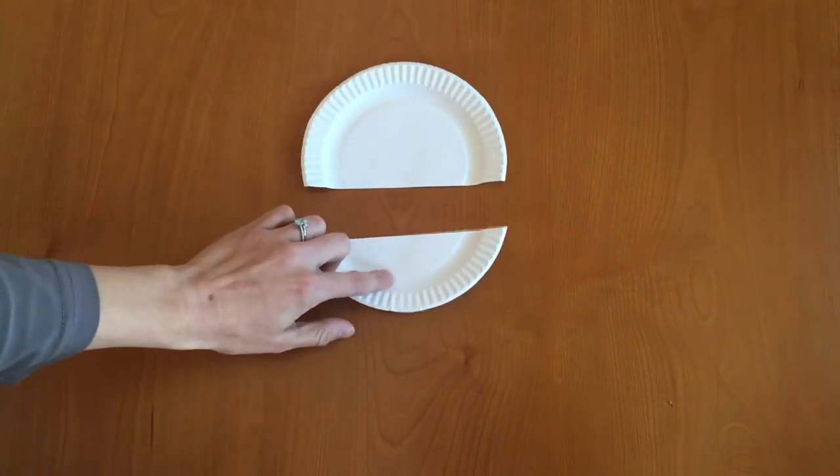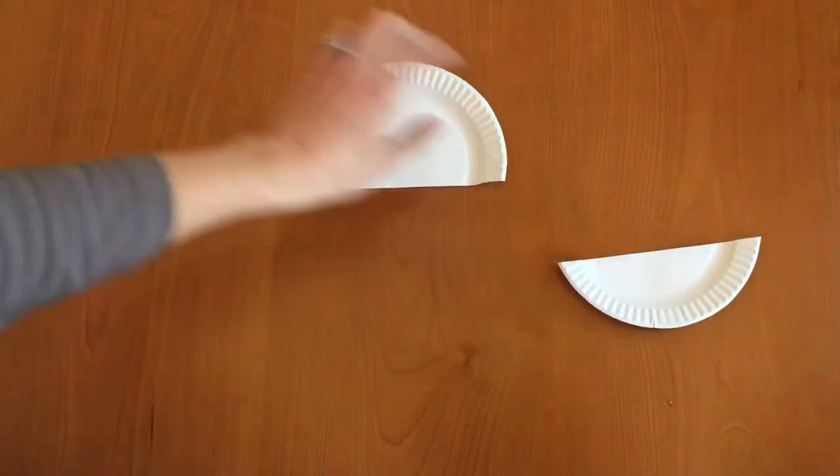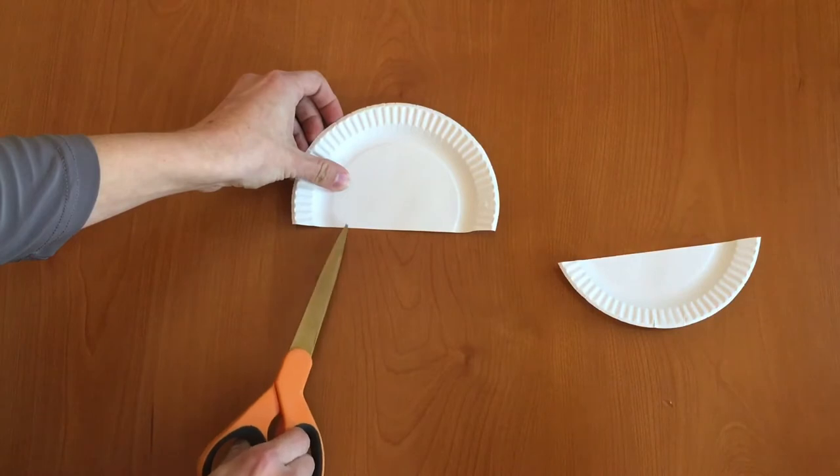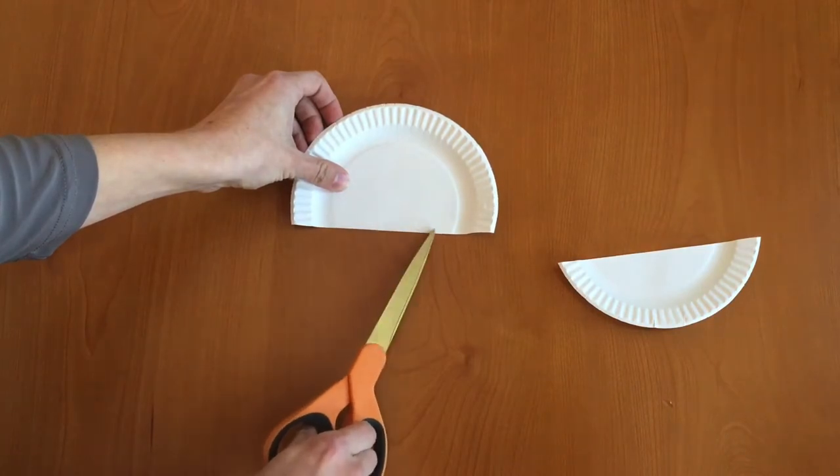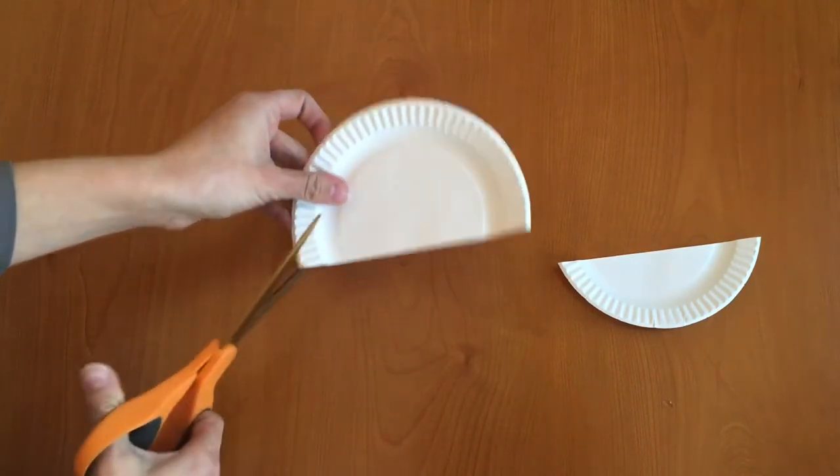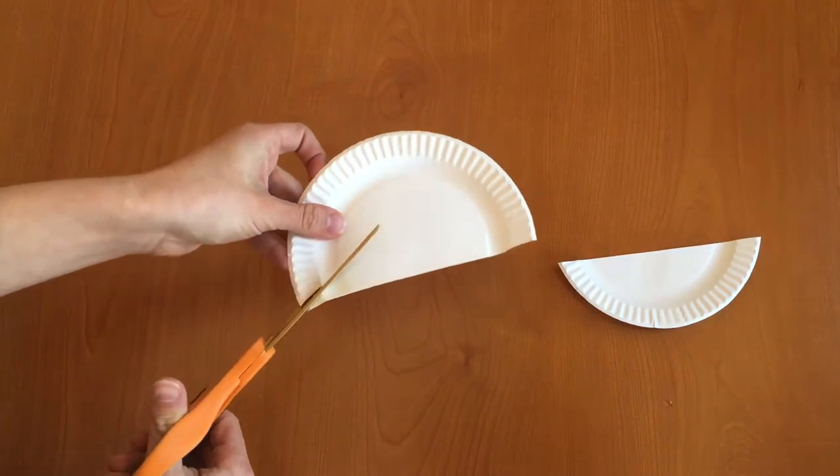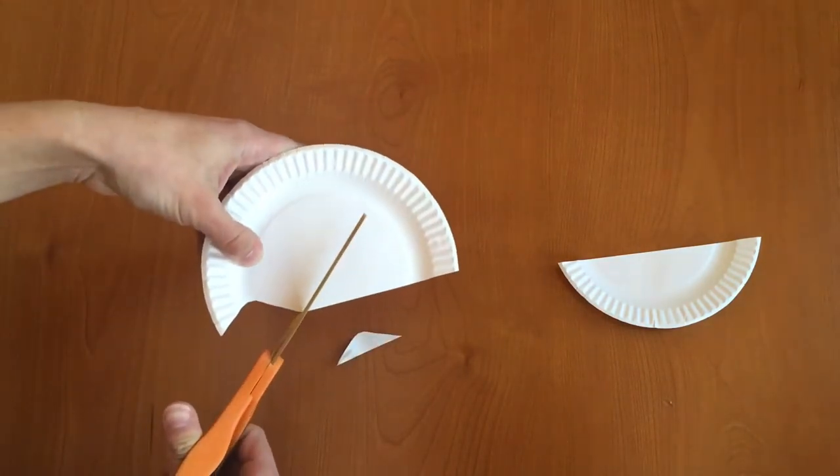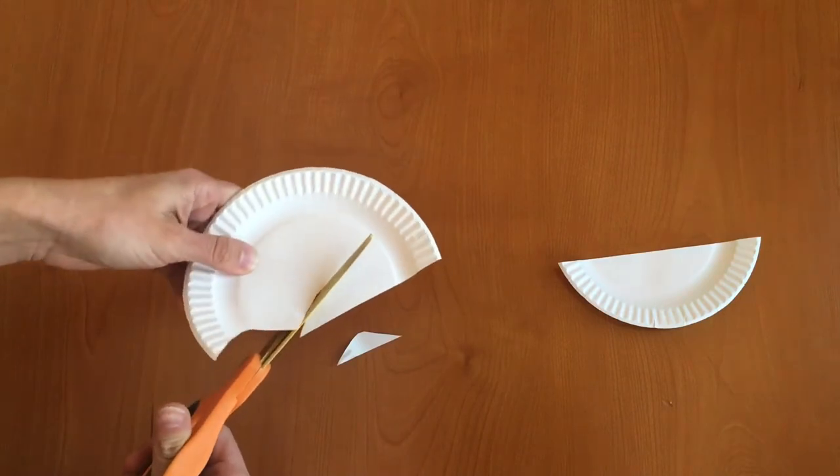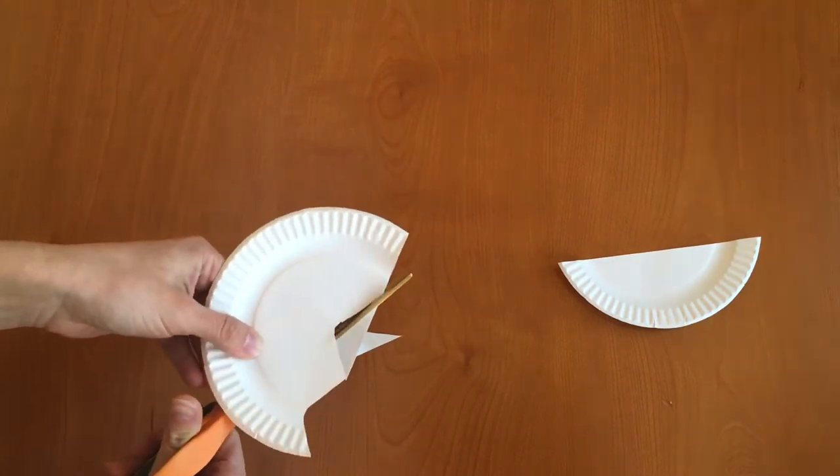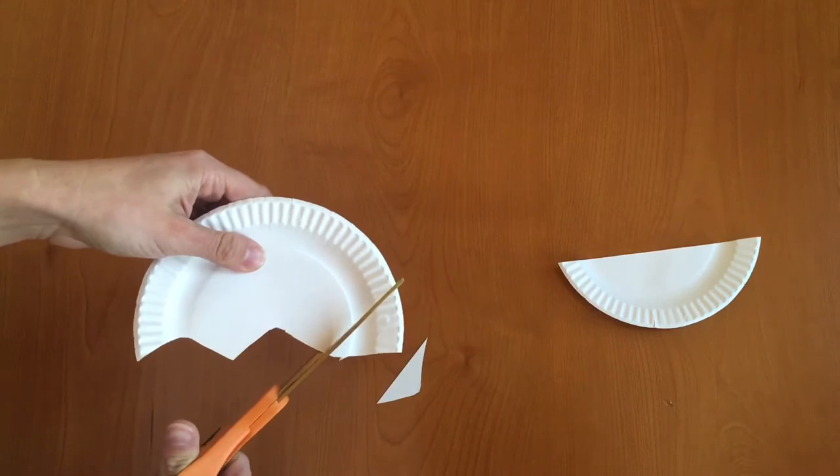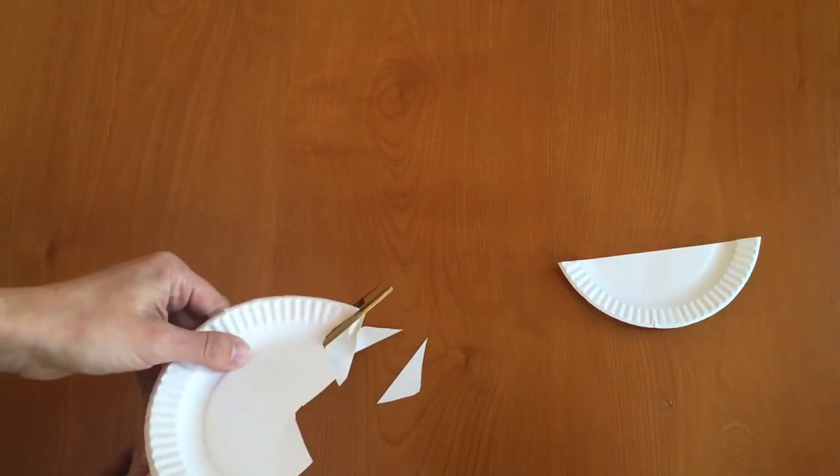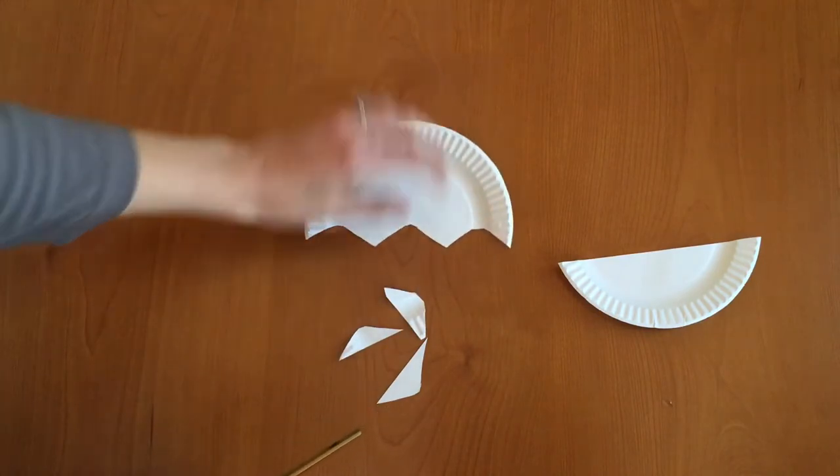Now we're going to save this bottom smaller piece and with this top piece we're going to cut a reverse scallop shape, so it's kind of like waves in here and I'm just going to make four of them and this will kind of make this look like an umbrella. It doesn't have to be perfect. There we go.